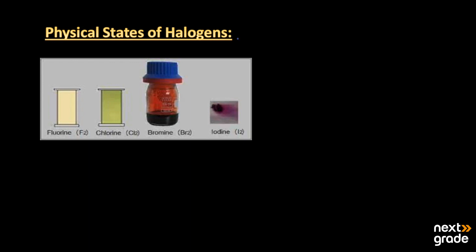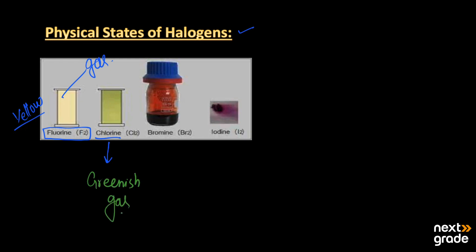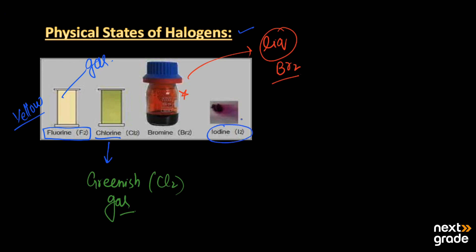Looking at the physical states of the halogens: fluorine exists as a pale yellow gas; chlorine exists as a greenish-yellow gas (Cl2); bromine exists as a reddish-brown liquid (Br2); and iodine exists as a black solid (I2). Iodine can also exist in all three physical states — solid, liquid, and gas — and can be converted between them.